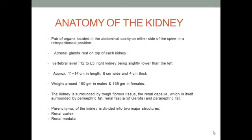The kidney is created in the retroperitoneal space with the adrenal gland sitting on top of it. Its vertebral level is around T12 to L3 and the size is around 12 by 6 by 4 centimeters, weighing 150 grams in males and 135 grams in females. It is surrounded by the renal capsule, followed by the perinephric fat, then the Gerota's fascia, and finally the paranephric fat on the outside.